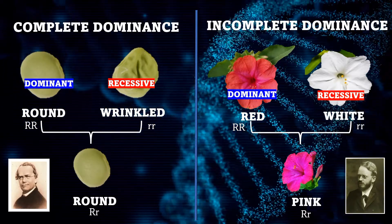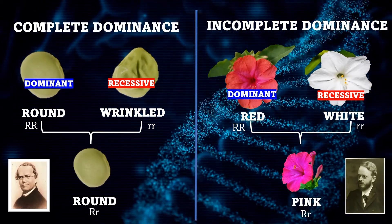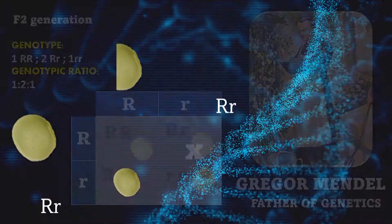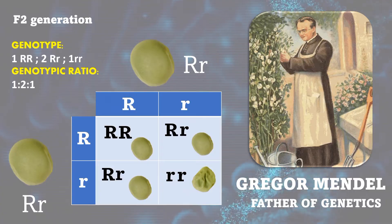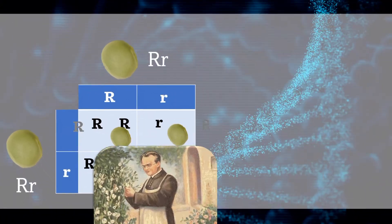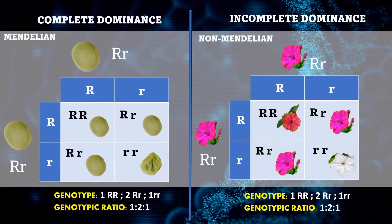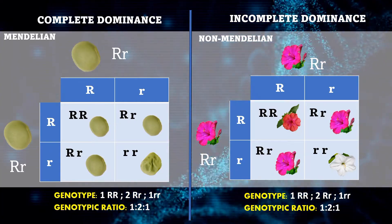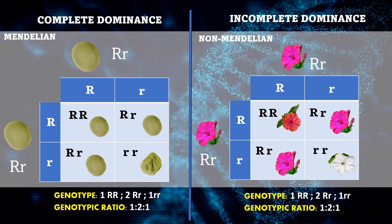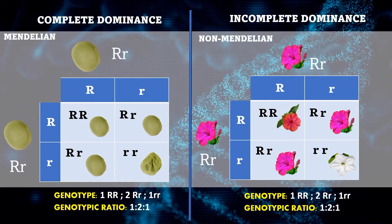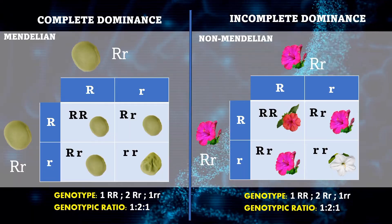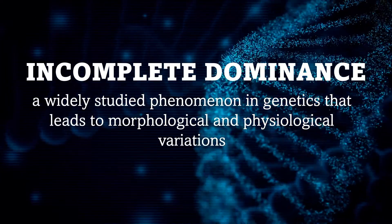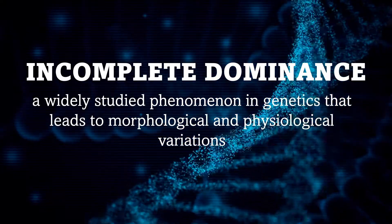Mendel did not study incomplete dominance because the pea plant does not show any incomplete dominance or intermediate traits. However, Mendel's proposed ratio of 1:2:1 tends to be accurate for incomplete dominance, as seen in the example of the four o'clock flower, where the F2 generation results in red, pink, pink, and white flowers with a genotypic ratio of 1:2:1. Incomplete dominance is a widely studied phenomenon in genetics that leads to morphological and physiological variations.